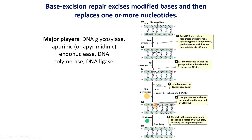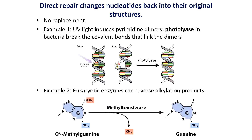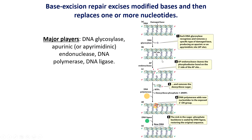Base excision repair works similarly to mismatch repair, where an error is recognized, removed, and filled in. Here, we're looking at a damaged base — it's not that a wrong base was inserted like in mismatch repair, but rather a base has been damaged by some type of mutagen. A damaged base can be removed and repaired by base excision repair. This is similar to direct repair, only in direct repair we fix the problem by altering the base back to its original form, while in base excision repair we pull out the incorrect base and add in a new one. The major players are DNA glycosylase, an apurinic site, an endonuclease, a DNA polymerase, and DNA ligase.